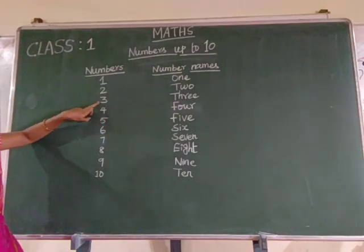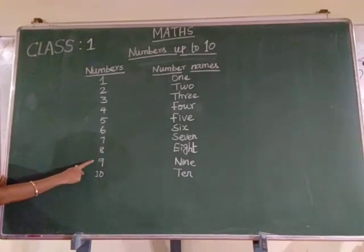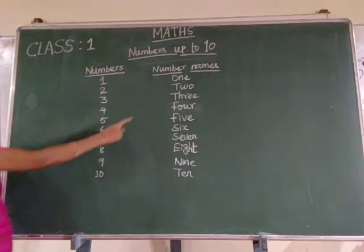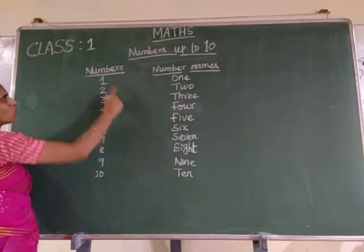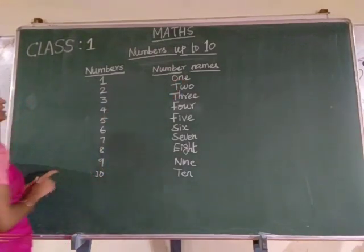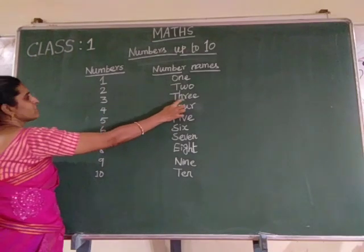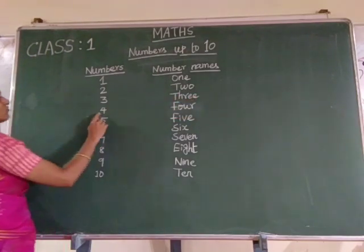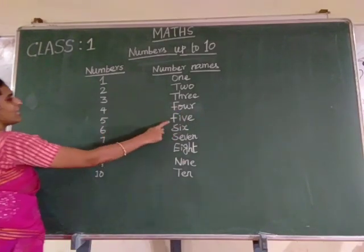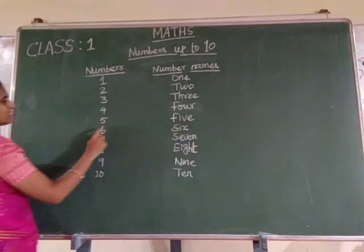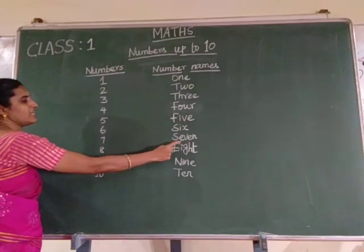1, 2, 3, 4, 5, 6, 7, 8, 9 and 10. Number name means we should write in words: 1, 2, 3, 4, 5, 6, 7, 8, 9, 10.